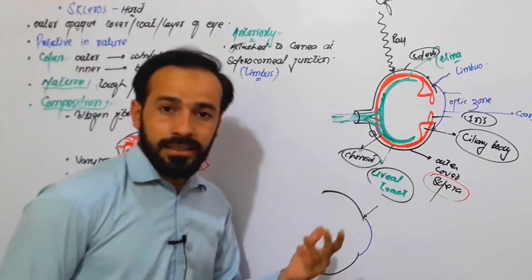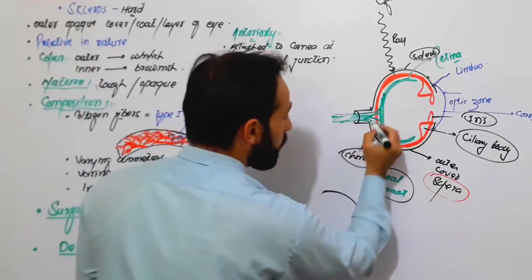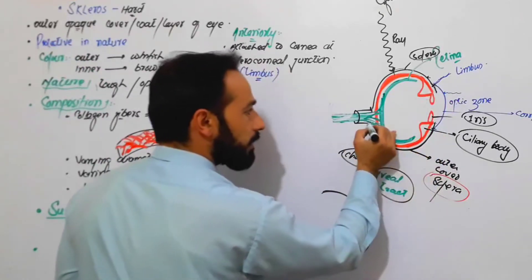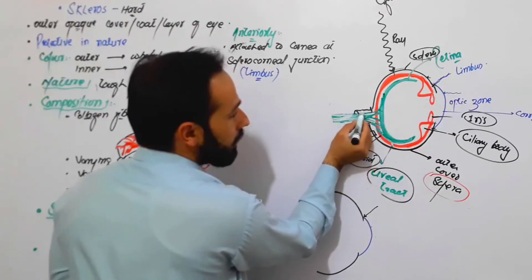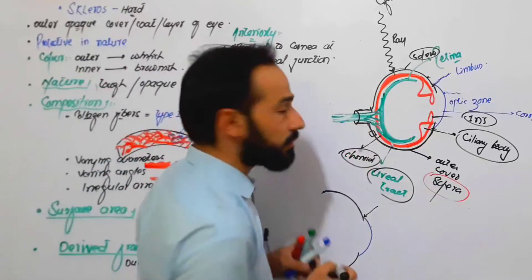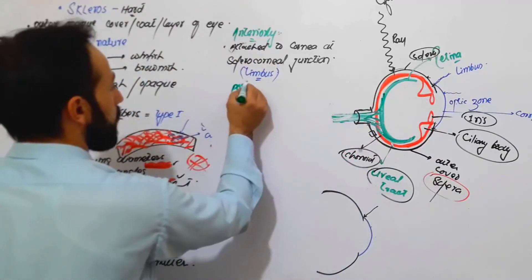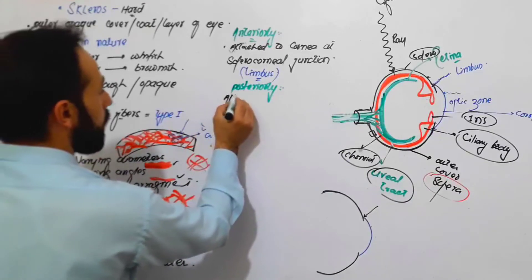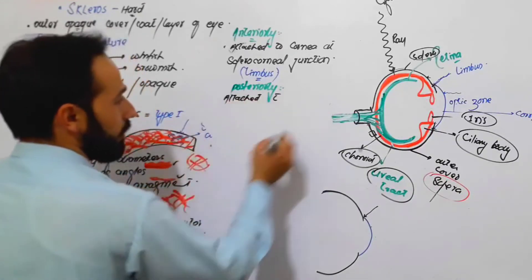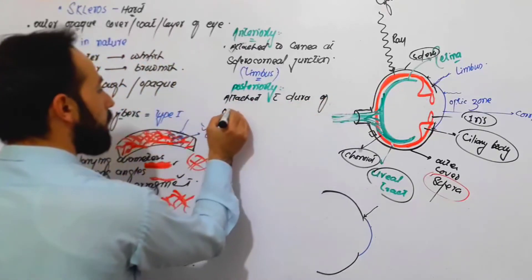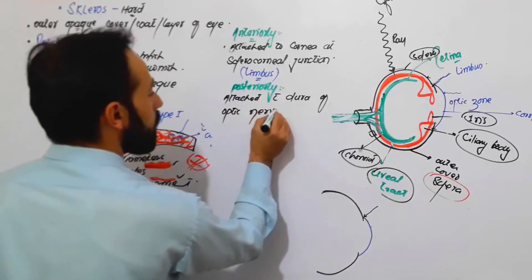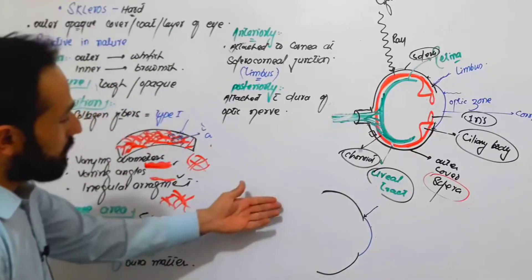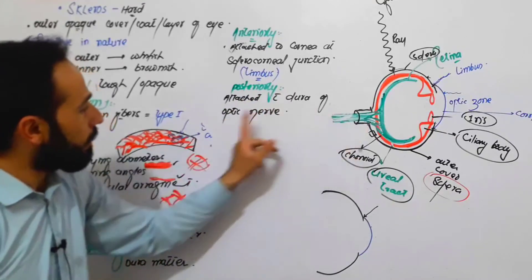That was the anterior attachment. Posteriorly, the sclera attaches with the dura of the optic nerve, as previously explained in the diagram.